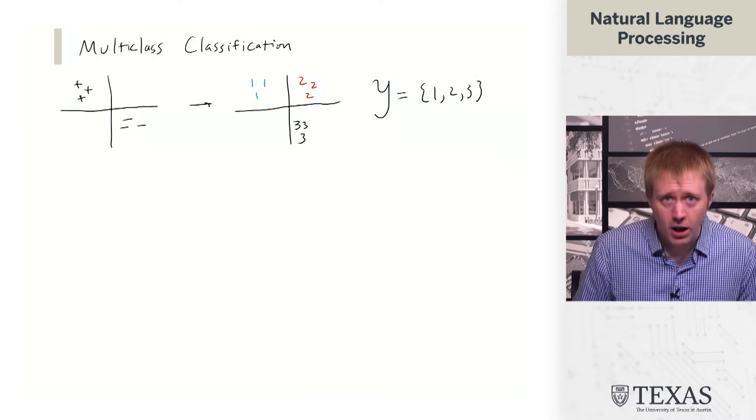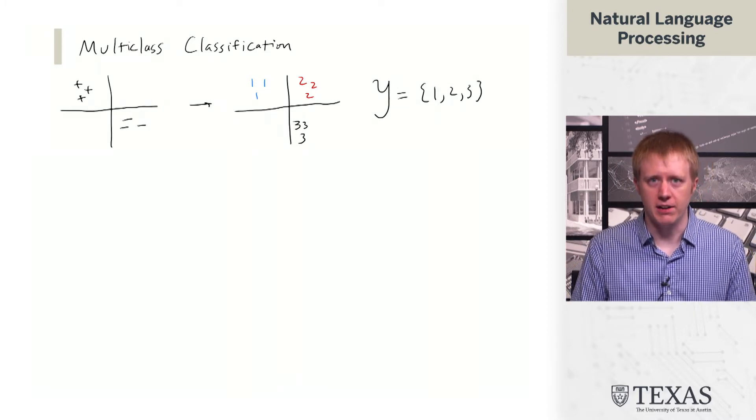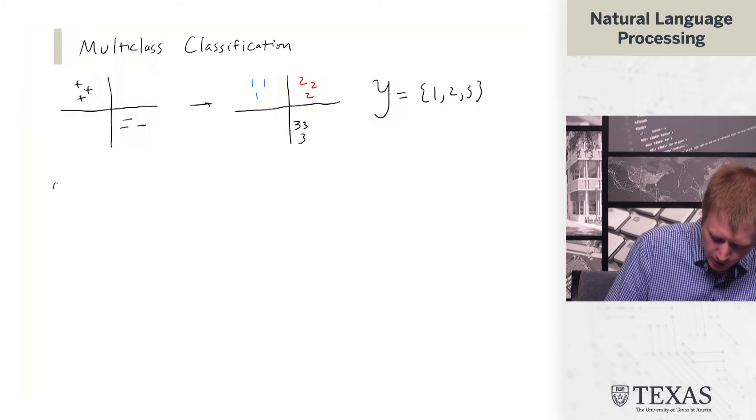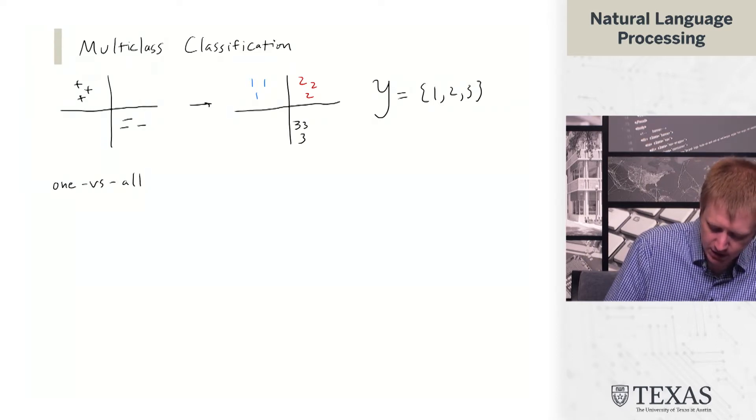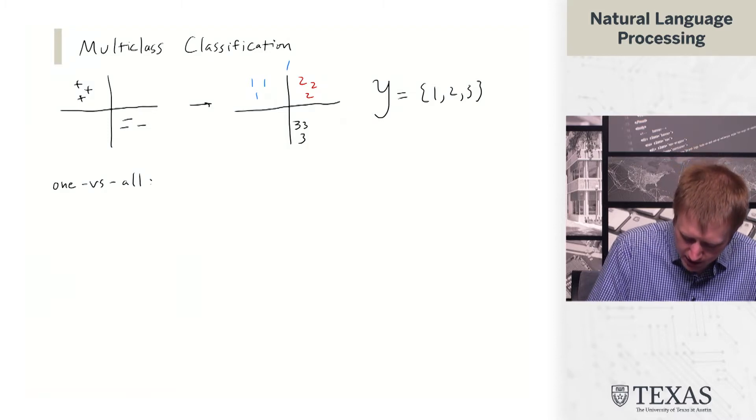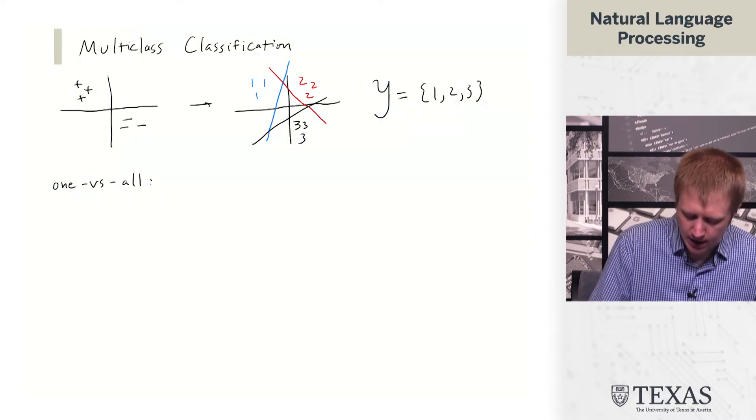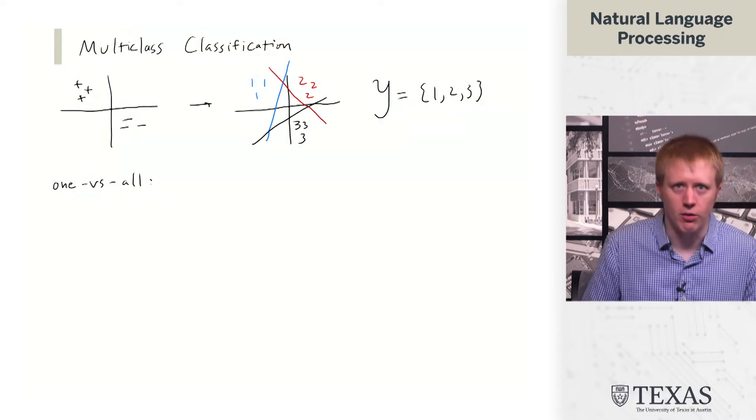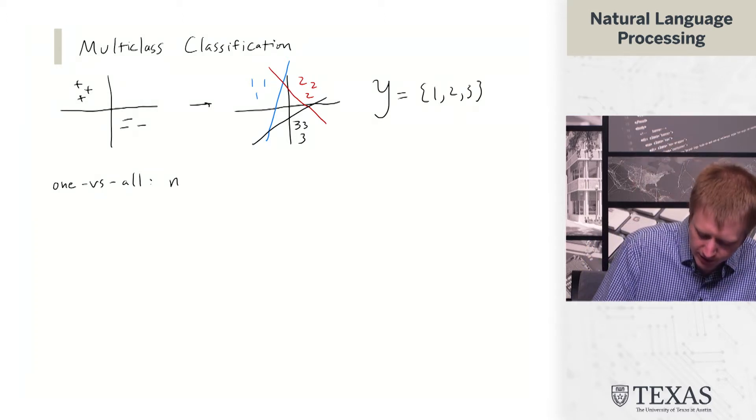There are ways of doing this with binary classification. For example, you can have a technique called one-versus-all where basically you draw a boundary that separates each class from all of the other ones. This comes about from having N binary classifiers.